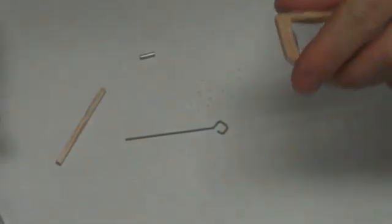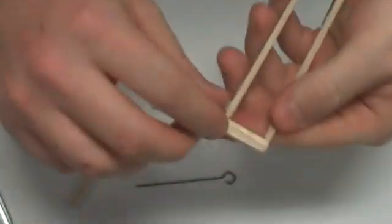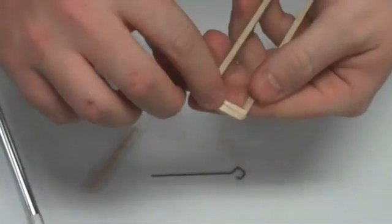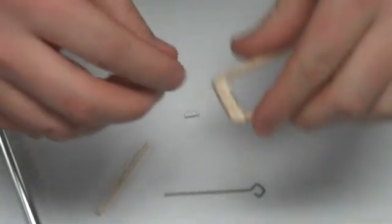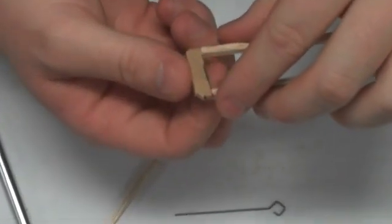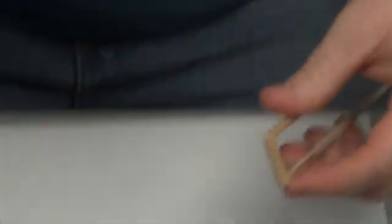I do recommend taking some lighter balsa and gluing some strips on the outside of where your axle goes through to help thicken that up, because this thickness here is very close to the same thickness as my top support there.